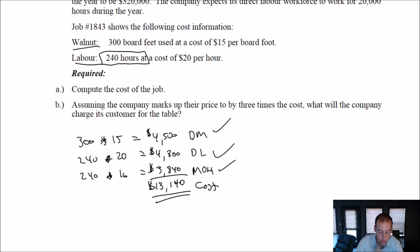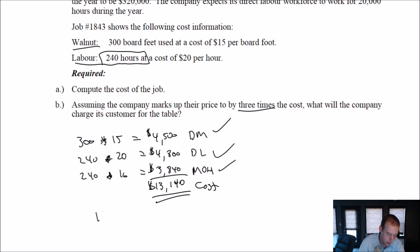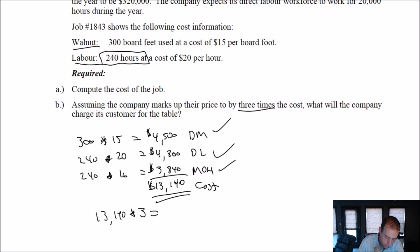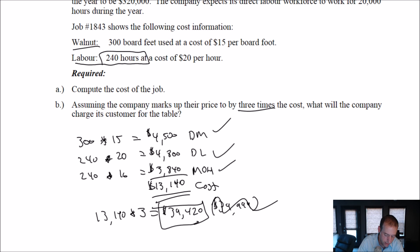So that's the cost of the job. Assuming a company marks up their price by three times the cost — not highly unusual — what will the company charge its customer? If my cost is $13,140 and I charge three times what it costs, that's $13,140 times 3, which equals $39,420. Probably I would charge $39,999 or just round up to $40,000, but the number based on what the question asks is $39,420. So part A: our cost is $13,140. Part B: our price is $39,420.